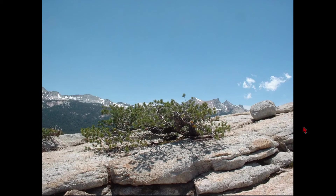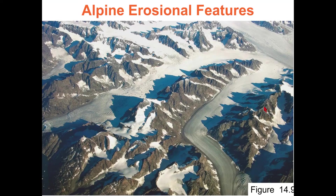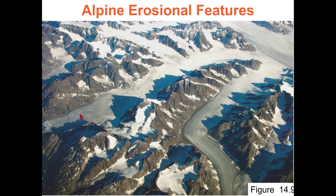A view from the top of Lembert Dome — we've got exfoliation and sheeting, chemical weathering with crystals weathering out, and a glacial erratic. This is Greenland — little glaciers flowing into a larger glacier, which empties onto the ocean as a tidewater glacier. Below the firn line it's just ice; above it there's snow on top of the ice.